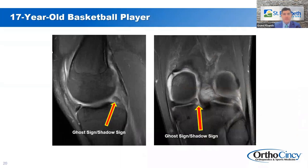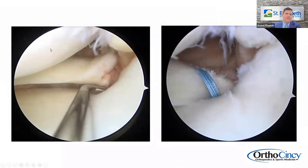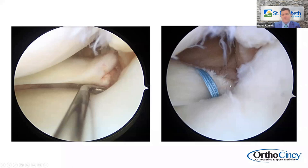This is a good example from a Holy Cross athlete — a ghost sign or shadow sign that was very subtle. This was an isolated posterior horn medial meniscal root tear, an extremely rare injury in isolation with no ACL injury. We went in and confirmed a complete avulsion of the medial meniscal root. We believe surgery for this type of patient will change their long-term outcome, because this athlete will develop rapid osteoarthritis in their medial compartment without an anatomic repair. At 17 years old, a total knee replacement would be devastating.